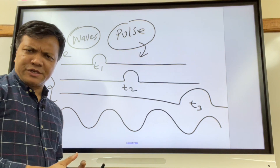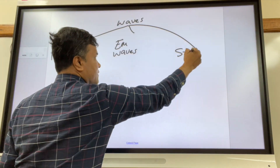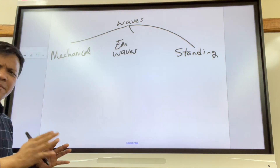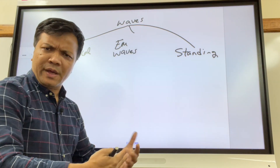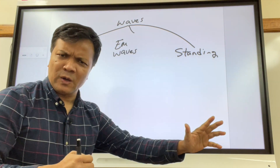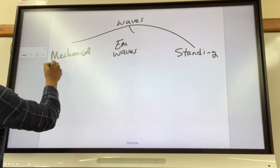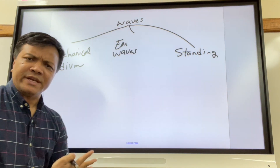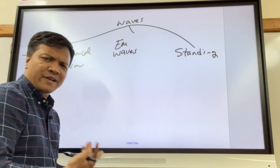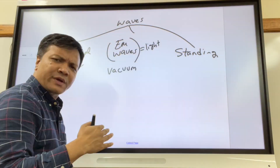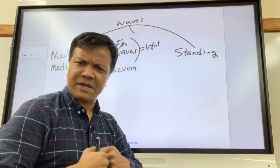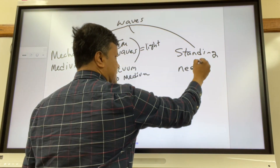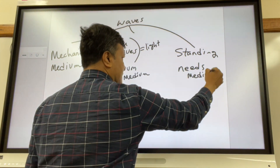We're going to talk about three types of waves: mechanical wave, EM wave, and standing wave. Mechanical waves need a medium to move energy from one location to another. EM waves — which is light — don't need a medium; they can carry energy in a vacuum. Standing waves also need a medium.